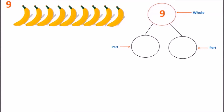Welcome everyone, it's Miss Judy. Today we're going to be taking a look at the number nine and the different ways that we can make the number nine. We are going to be using bananas in today's class. You can always start with a zero, so we have a zero on the left and a nine on the right — together they make up the number nine.